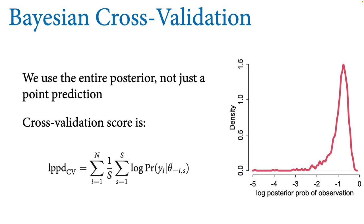As good Bayesians, we don't use points — we always use distributions. Estimates are distributions; points are decisions. Usually in research we want to communicate the estimate and let colleagues make up their own minds about decisions. So we use the whole posterior, and when we assess fit both in and out of sample we use something called LPPD — the log pointwise predictive density.